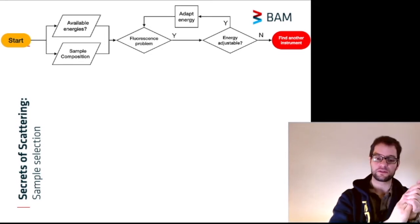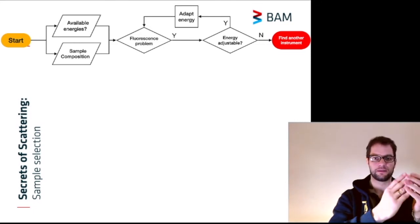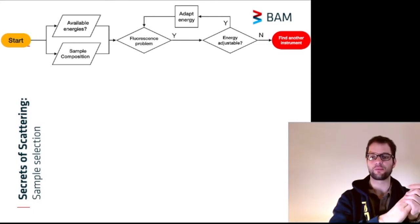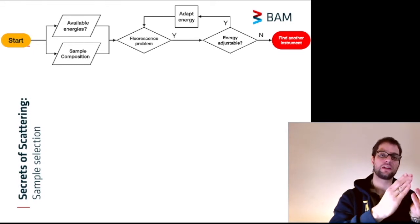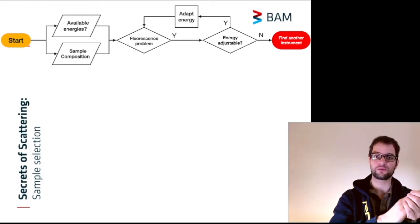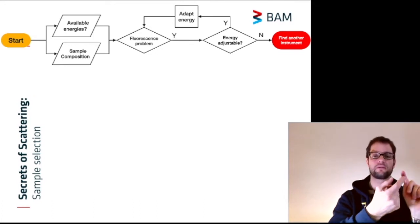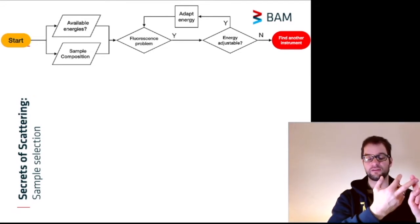So, if you've looked at your sample composition and you think this might be a problem, try to find out if you can adjust the energy. In our laboratory instrument, we have two energies available. We have copper energy, which is the most intense source that we have, but we also have molybdenum energy available.